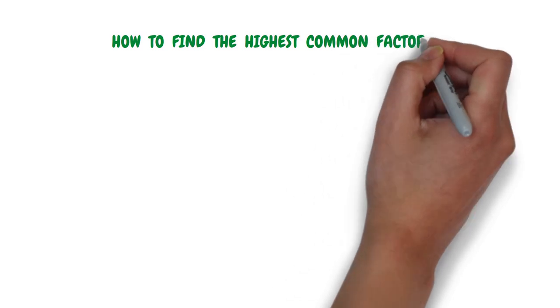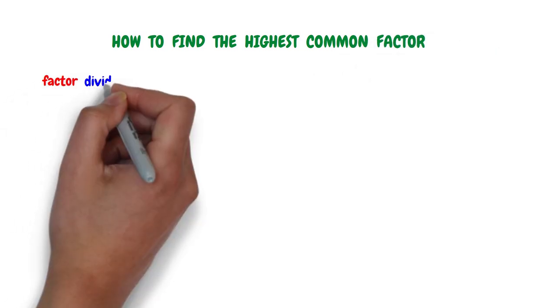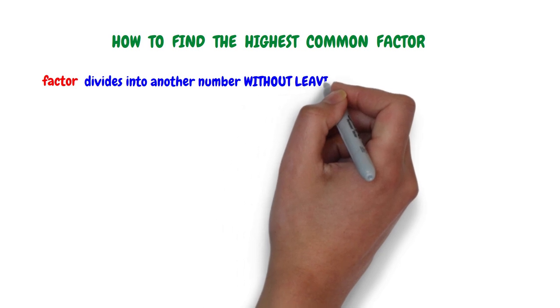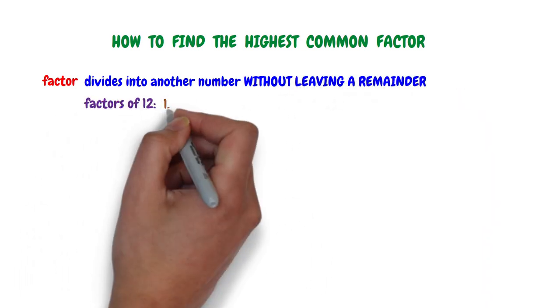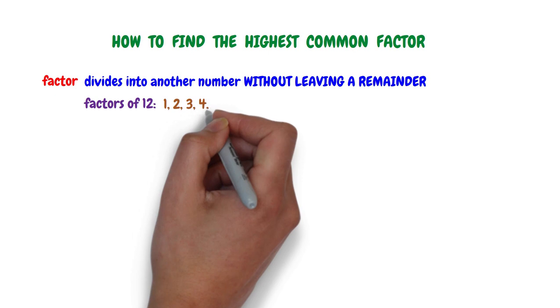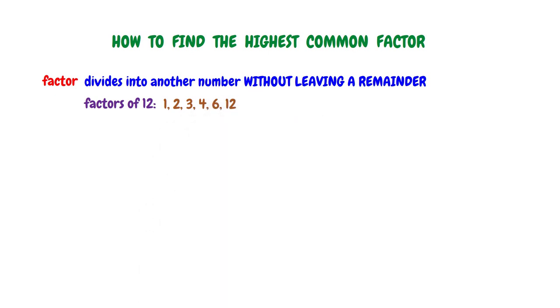This video talks about the factors of a number and how to find the highest common factor, abbreviated as HCF. A factor is a number that divides into another number without leaving a remainder. For example, the factors of 12 are 1, 2, 3, 4, 6, and 12 itself. All these numbers can be divided into 12 without leaving a remainder.